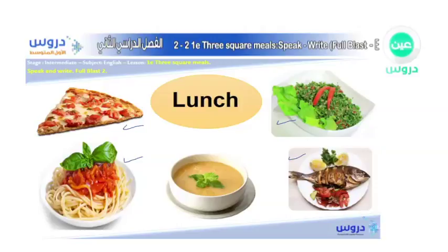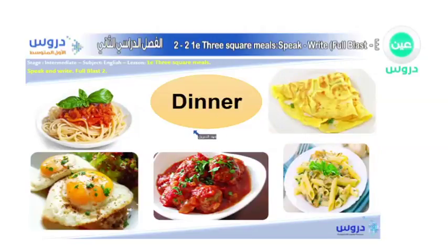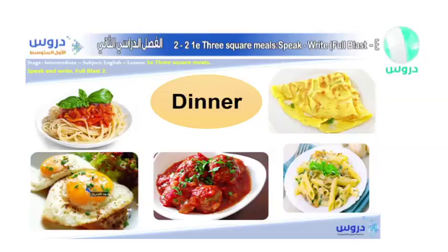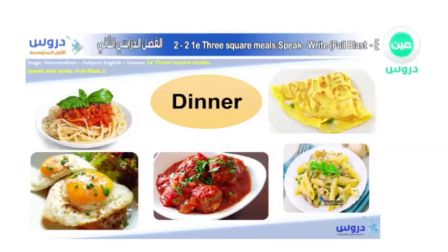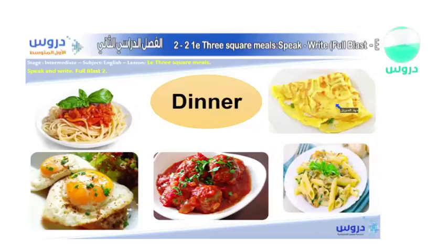Now let's move to the next one — for dinner. Here we have another pasta, some eggs, and some meatballs with sauce. Then there's another kind of pasta — pasta with sauce — and this one is a different kind. And finally, there's an omelet. Do you know what an omelet is? It's made of eggs and many other ingredients. So we have five pictures for dinner.